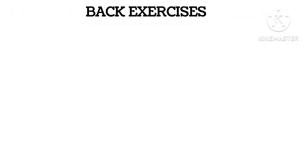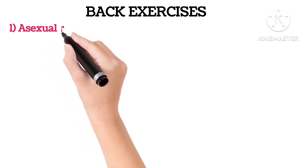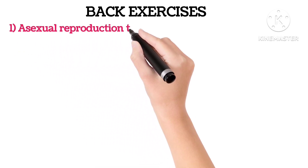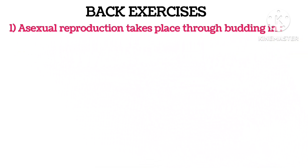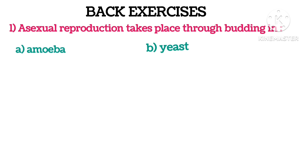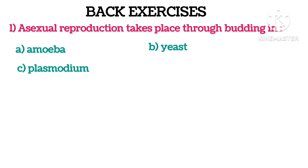Back Exercises. Question A: Sexual reproduction takes place through budding in — A. Amoeba, B. Yeast, C. Plasmodium, D. Leishmania. The correct answer is B. Yeast.